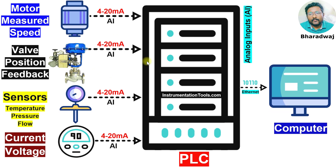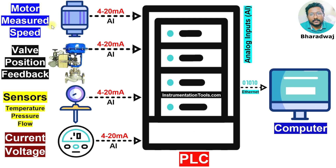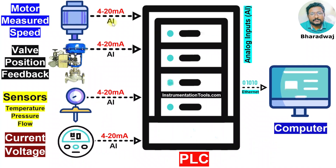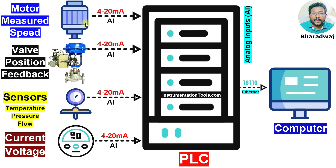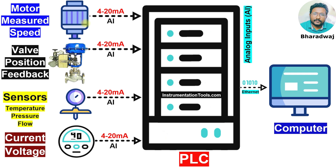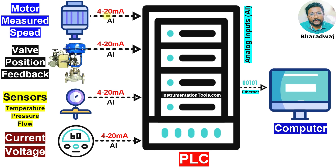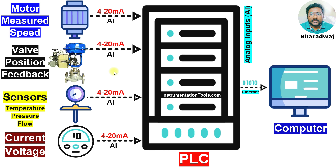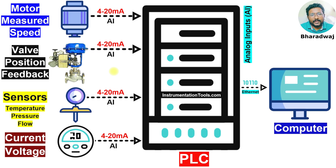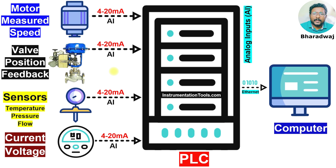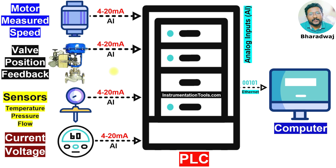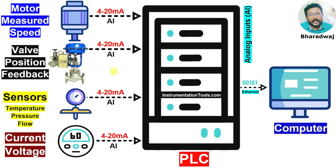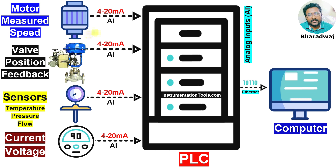Let's say the motor speed is 0%, 0 RPM — then the PLC receives a 4 mA signal. Let's say the motor speed maximum is 1000 RPM — then the PLC receives 20 mA. The zero scale is 4 mA and the full scale is 20 mA. Your measurement may be in any range, any unit. The transmitter or device calculates the equivalent current signal and sends it to the PLC.